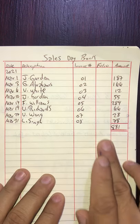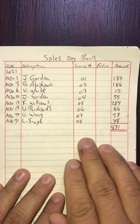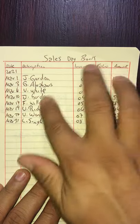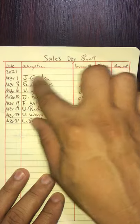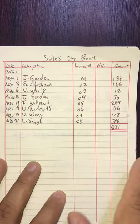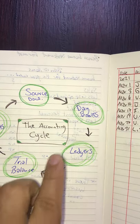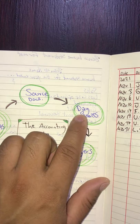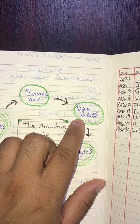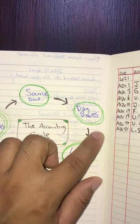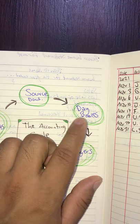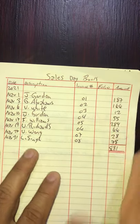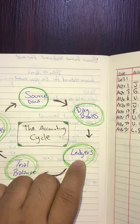The next step is to use our folio in combination with our T-accounts. We've journalized the transactions — now we need to take these transactions to our ledgers or T-accounts. We've done the sales day book today; we will also do the purchases day book, return inwards, and other day books, but today I'm focusing on the sales day book.